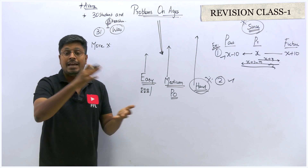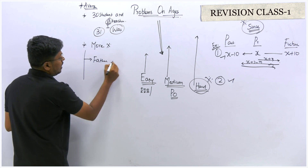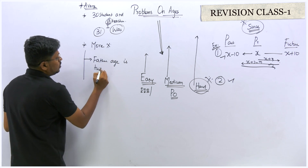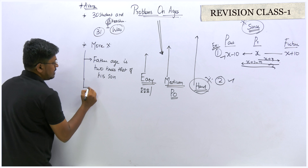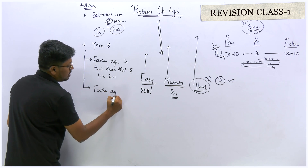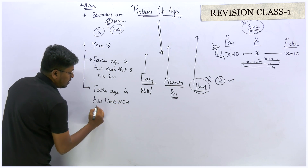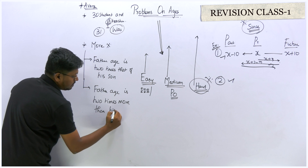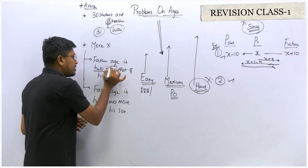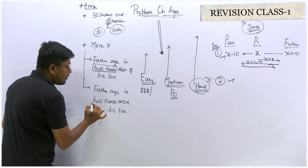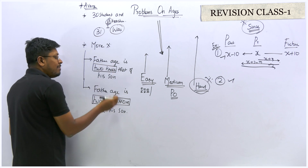The next most important concept is 'two times more', 'three times more'. I can write two cases: first, 'father's age is two times that of a son'; second, 'father's age is two times more than that of a son'. There is a difference between these two statements. The concepts look similar when you read both sentences, but because of the word 'more', the complete equation changes.